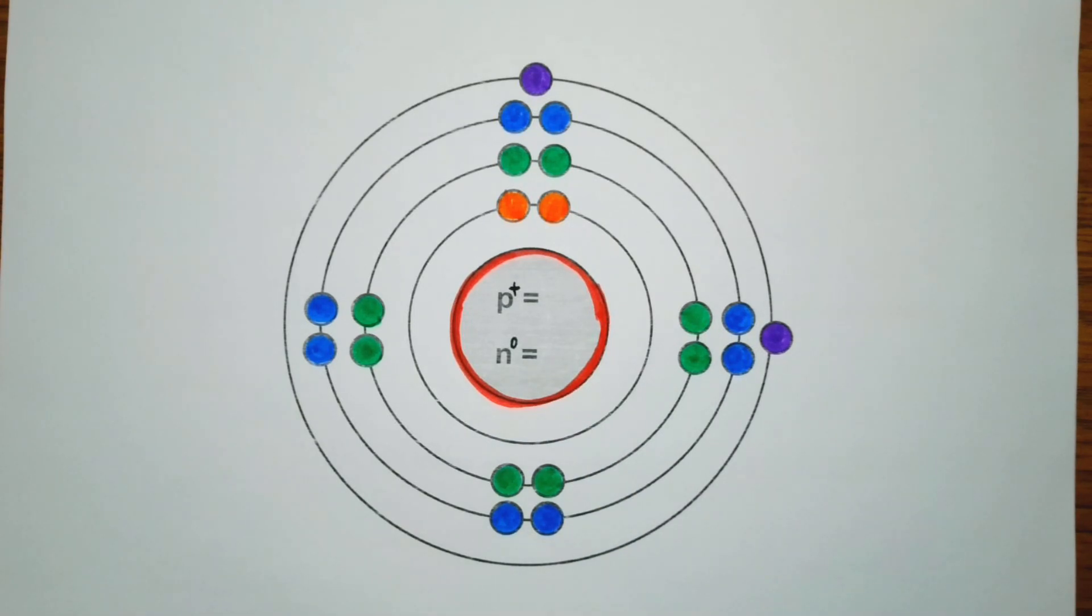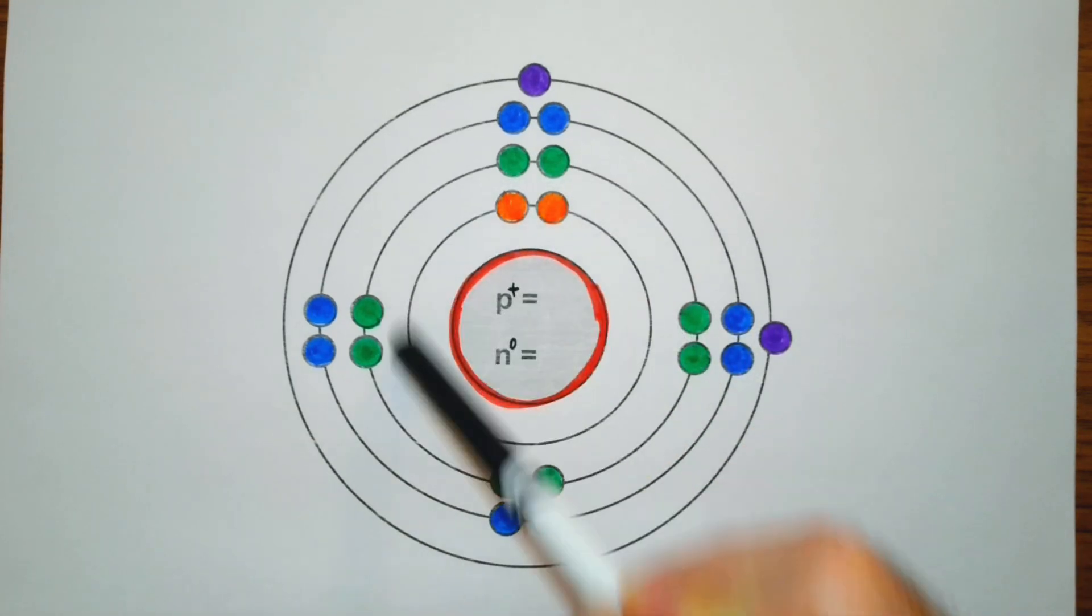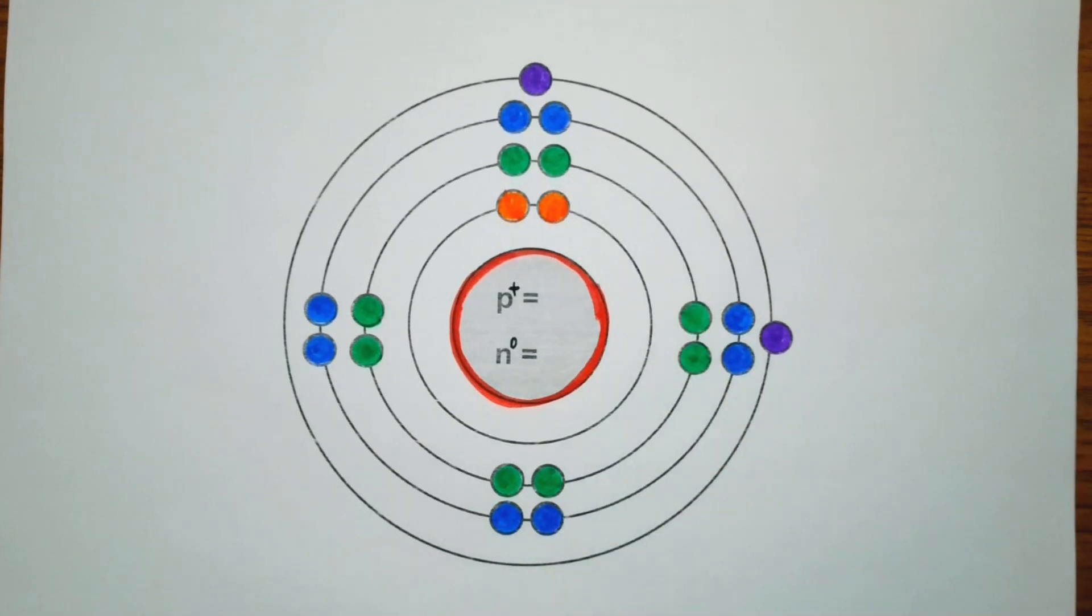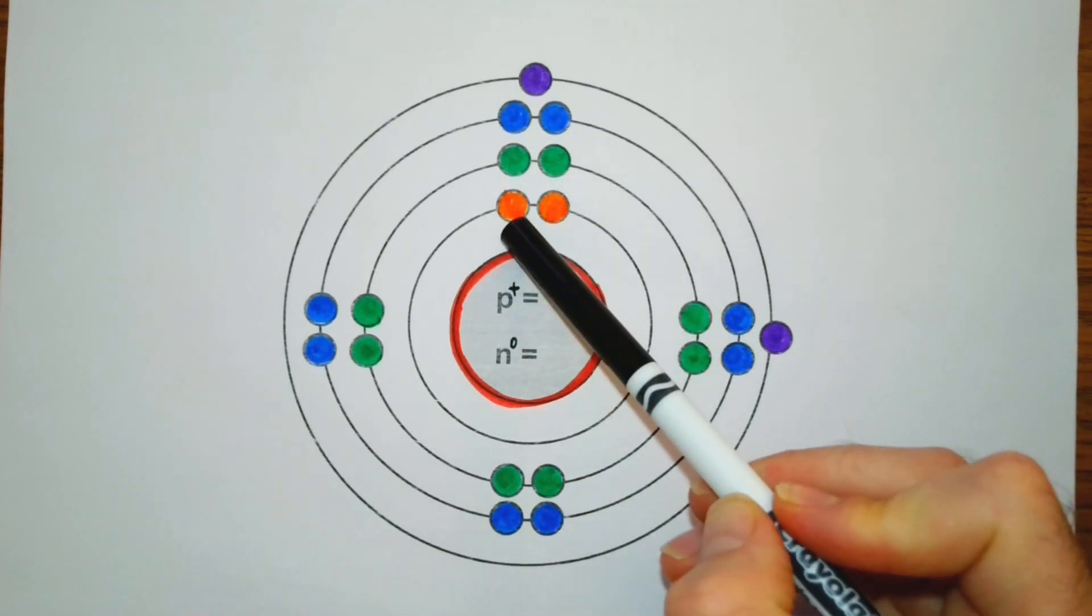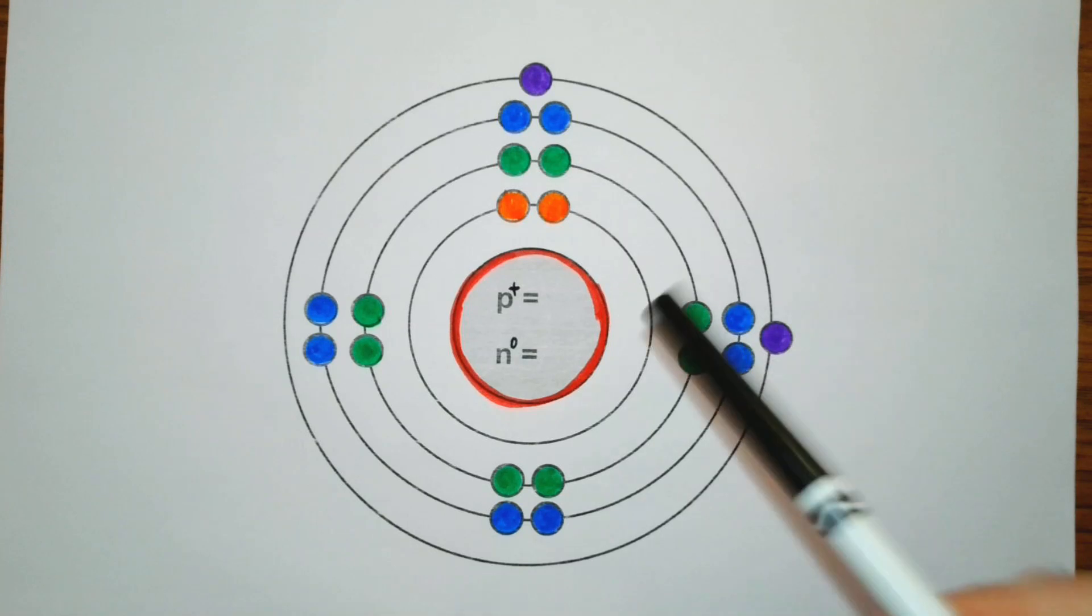The first orbital, remember electrons go around the nucleus in orbits, so this first orbital can hold a maximum of two electrons. After that first electron, it pairs with that second electron.